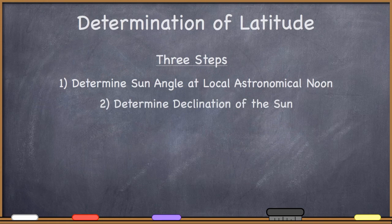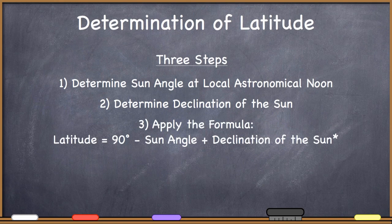Step two: determine the declination of the sun. If you have the sun's declination information cataloged on an analemma, you look at it and find out the declination of the sun. Then you simply apply the formula: your latitude equals 90 degrees minus the sun angle plus the declination of the sun. And that's it.